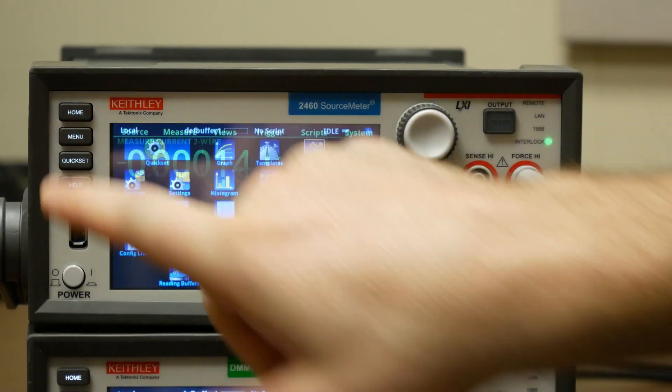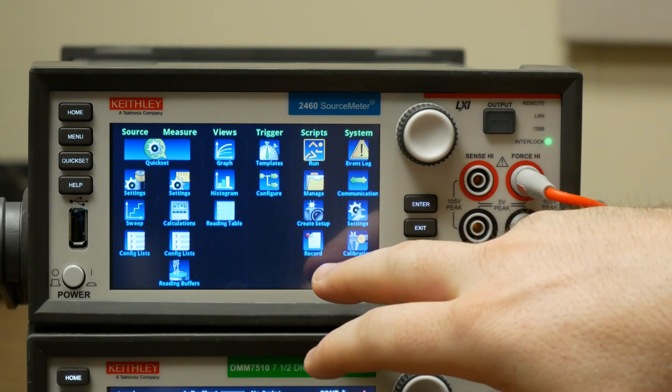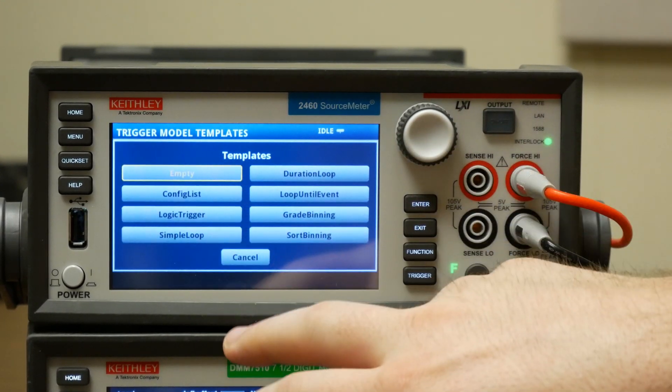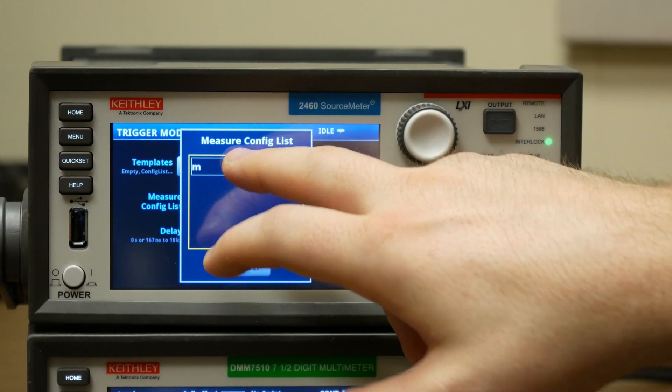Now, if we want to set up so that it loops through this configuration list, we can go to trigger templates and choose config list. We will choose our measure config list, which in this case is M,